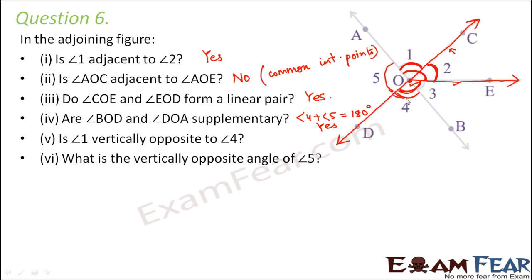Is angle 1 vertically opposite to angle 4? This is angle 1 and this is angle 4. Let us highlight the lines which make these angles — one line is DC and the other line is AB. AB and CD are intersecting lines that intersect at this point. Angle 1 and angle 4 are located opposite to each other — they are opposite angles formed by two intersecting lines. Therefore, yes, angle 1 and angle 4 are vertically opposite angles.